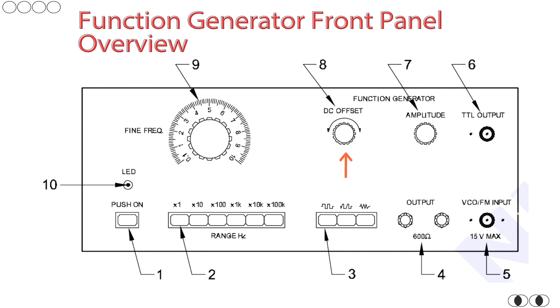Number eight. DC offset control knob. Purpose: Adds a DC voltage shift to the output waveform. Use case: Useful when testing amplifier biasing or shifting signal baseline.